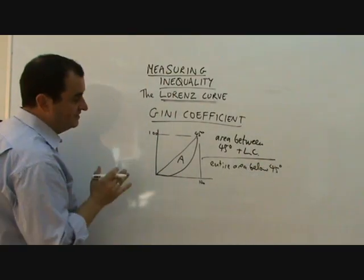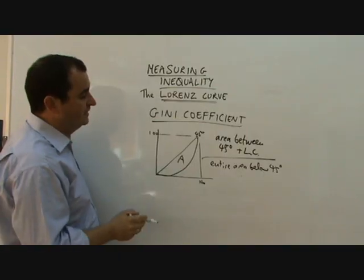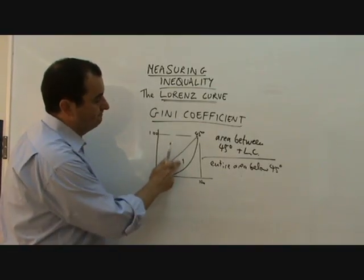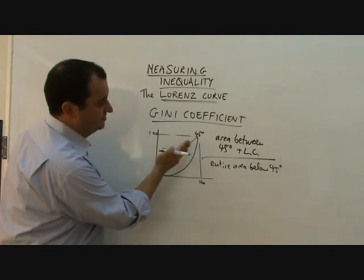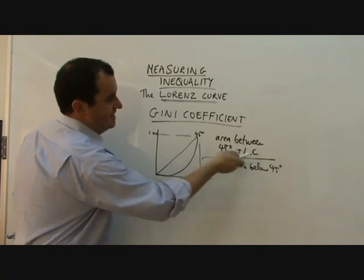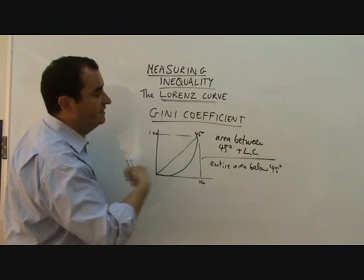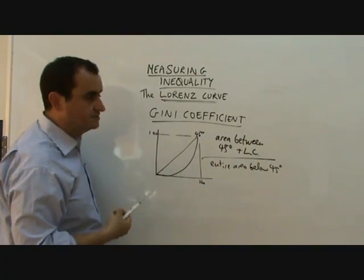Now, if this was a country with an extremely, extremely equal distribution of income, that Lorenz curve would be very, very close to the 45 degree line, and this area would be very small, and the Gini coefficient would come out to something very close to zero.